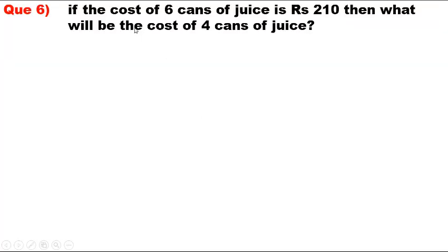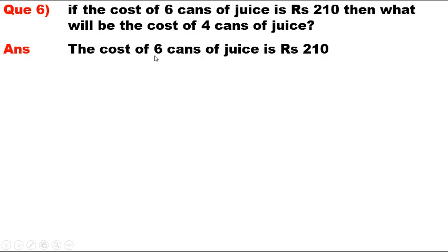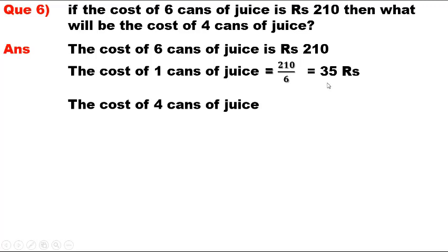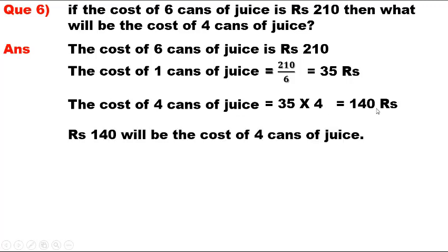Question 6. If the cost of 6 cans of juice is Rs. 210, then what will be the cost of 4 cans of juice? Answer. The cost of 1 can of juice = Rs. 210 / 6 = Rs. 35. The cost of 4 cans of juice = Rs. 35 x 4 = Rs. 140. Therefore, Rs. 140 will be the cost of 4 cans of juice.